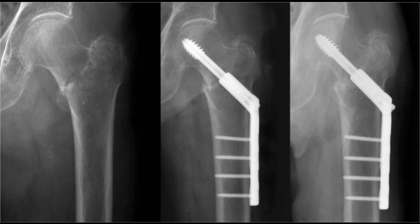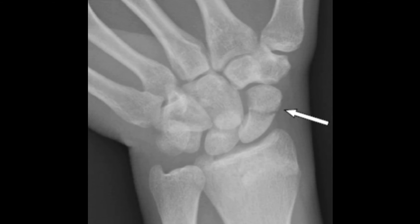In elderly people above 70 years old who are on steroid treatment or known to have osteoporosis, if there is a history of fall with pain in the hip and the leg is shortened and externally rotated, you have to keep fracture of the neck of femur in mind. Neck of femur fracture is very common in the elderly.